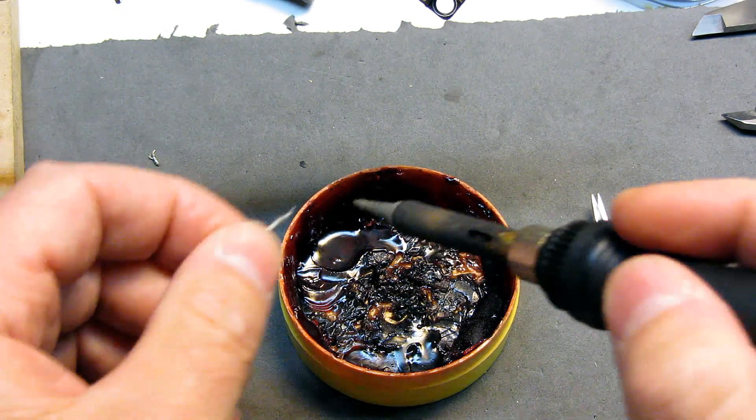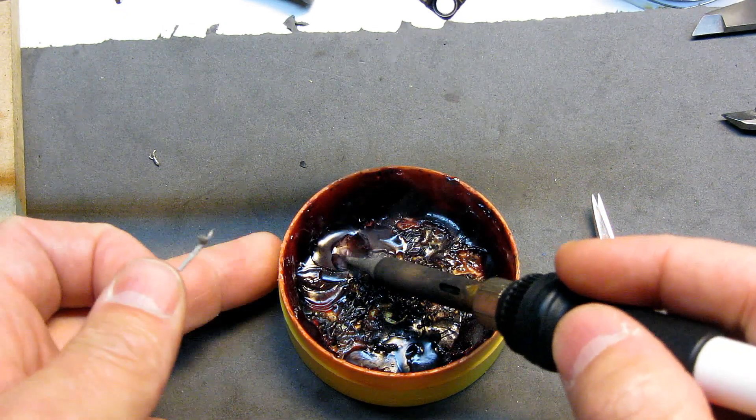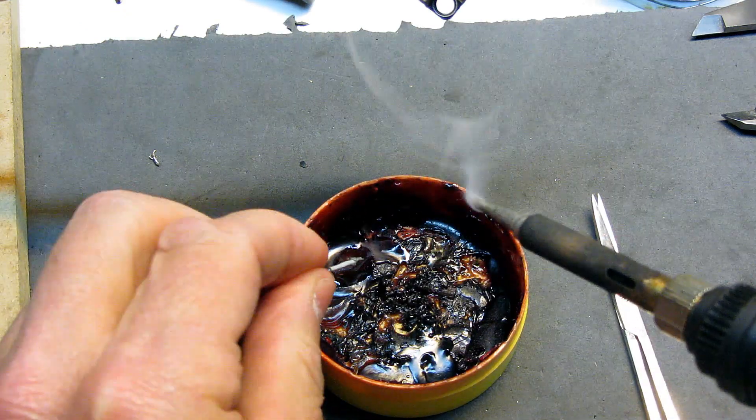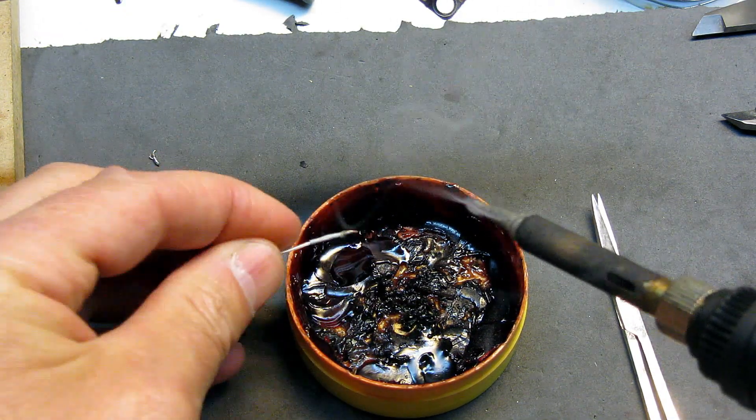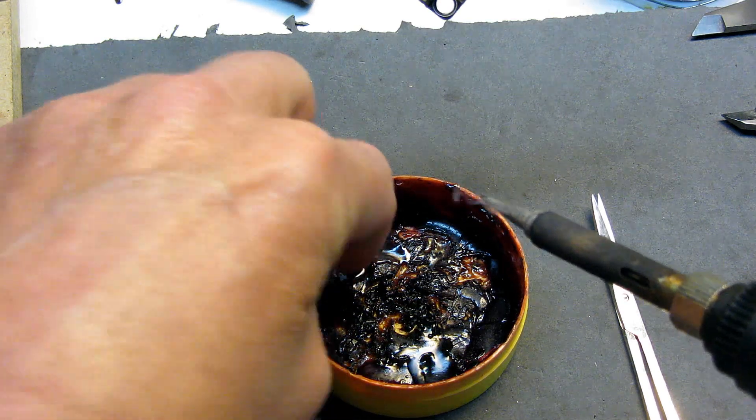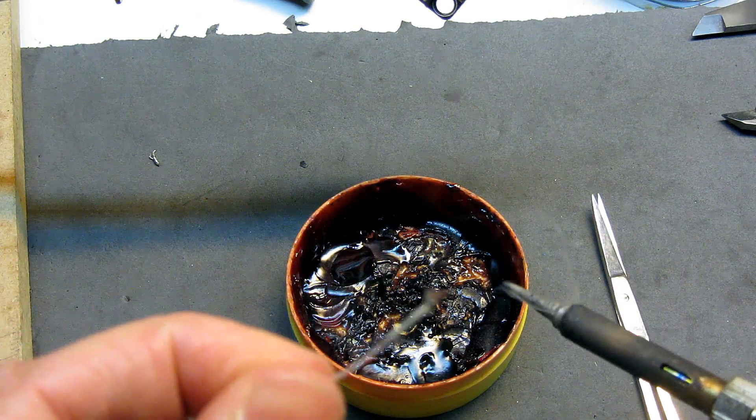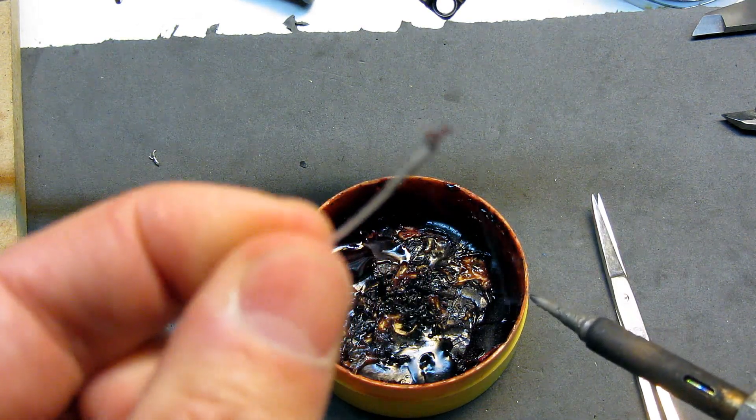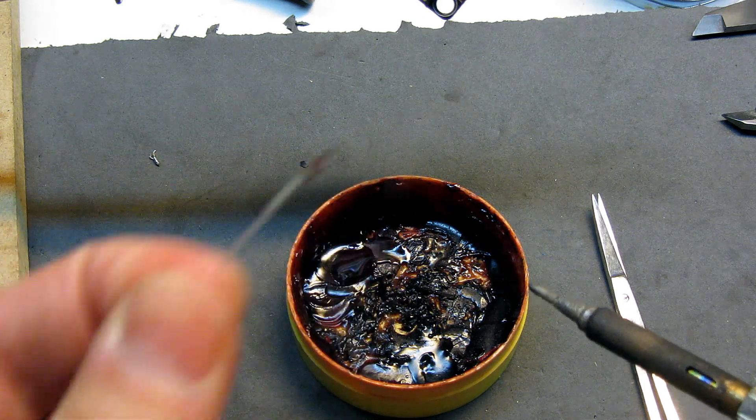What I like to do is just make a small little puddle in my flux and just dip it in there. And let me see if I can get the ground in there as well. There we go. Now we have some flux on it. Looks kind of like a mess right now.